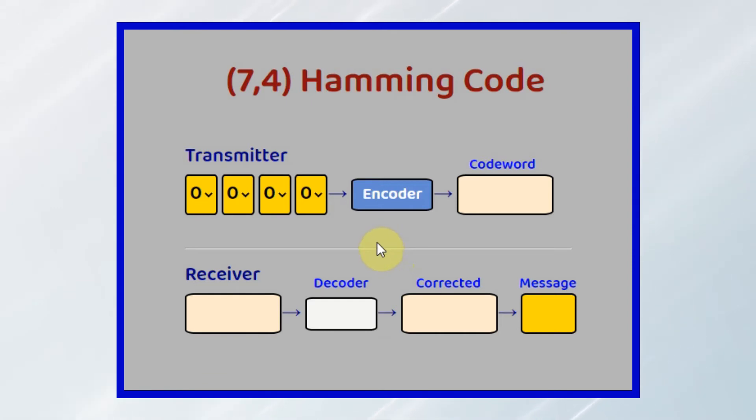This web page has been designed to demonstrate 7-4 Hamming code. Here we have the 4-bit message, which is fed into the encoder, and the encoder generates the 7-bit codeword. The codeword is sent over the noisy channel, and at the receiver, it is fed into the decoder, which checks whether a single error has occurred. And if no error has occurred, the message is extracted and passed to the destination.